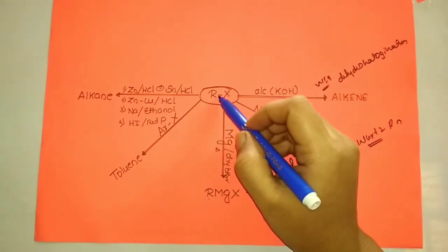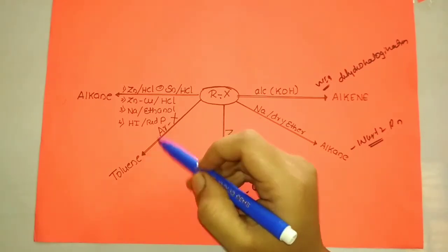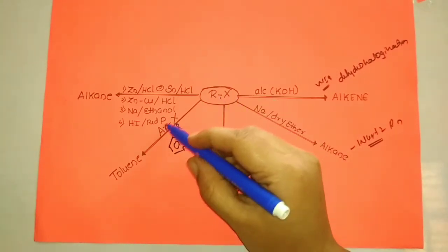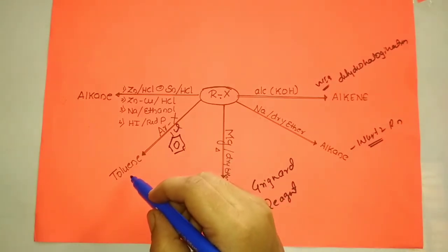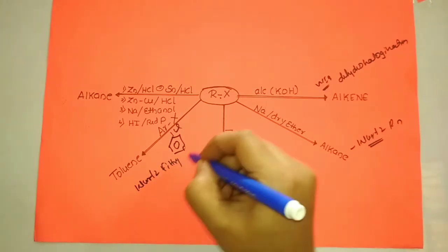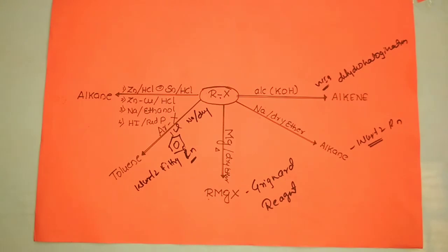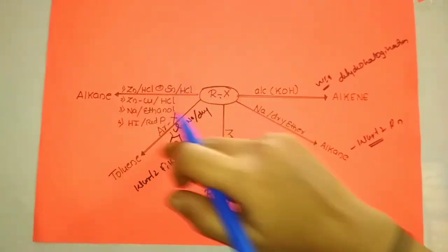When alkyl halide is treated with an aryl halide — such as chlorobenzene or bromobenzene — in the presence of sodium and dry ether, it gives a substituted aromatic hydrocarbon such as toluene. This reaction is known as the Wurtz-Fittig reaction.